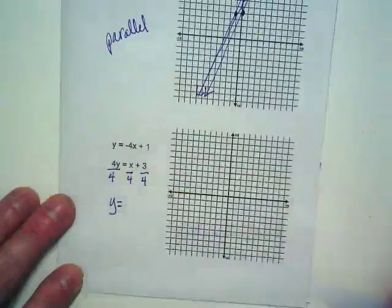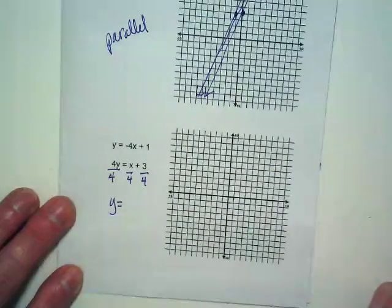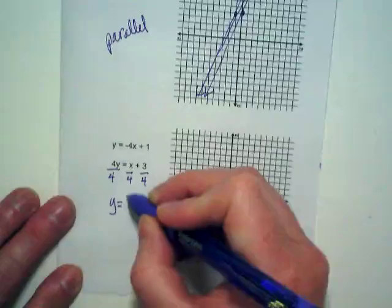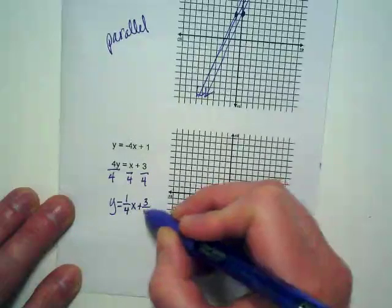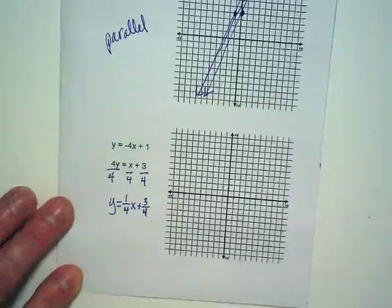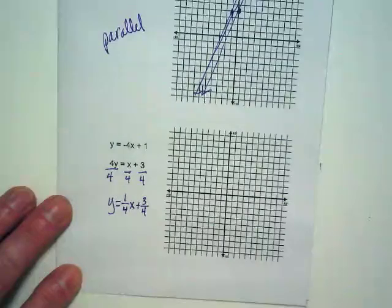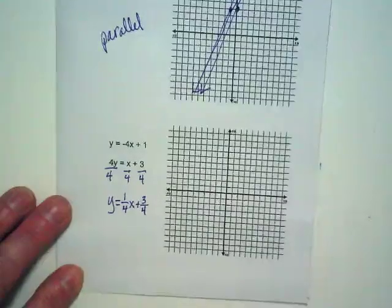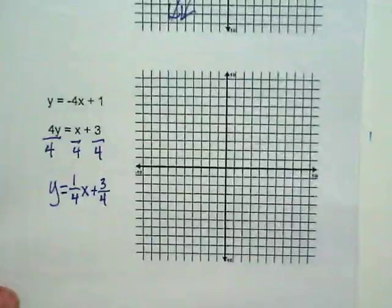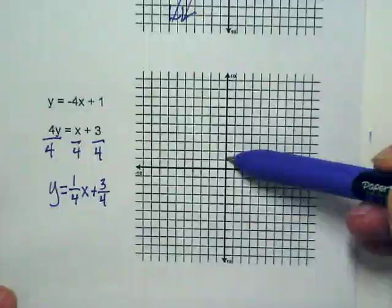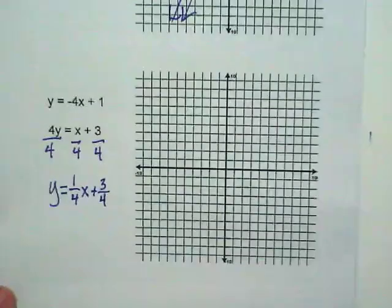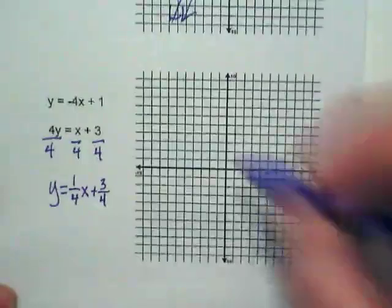And I get y is equal to... What's my slope, you guys? One over four x. One over four x. Plus three over four. Well, what do I do with a y-intercept that's a fraction? Where would three-fourths be on the y-intercept? Here's zero. Here's one. Where's three-fourths gonna be? Just below the one. This is kind of a small graph here. So you just need to estimate as best as you can where three-fourths is between zero and one. So it would be about here.